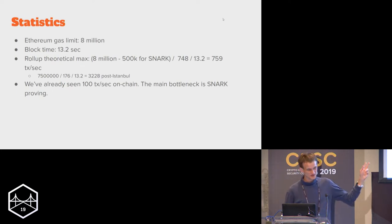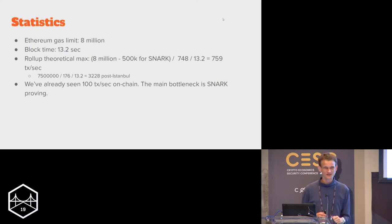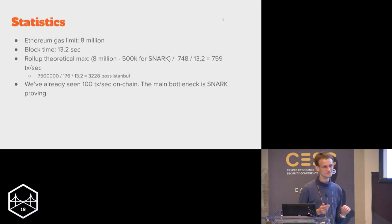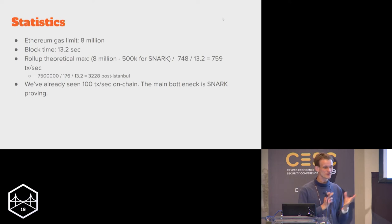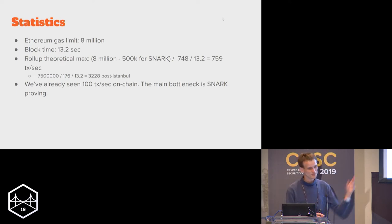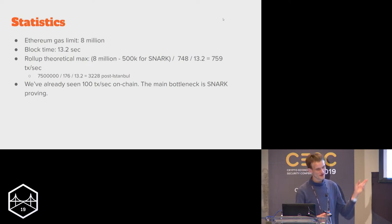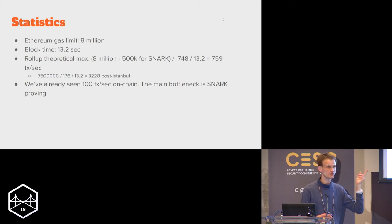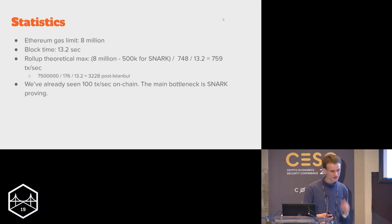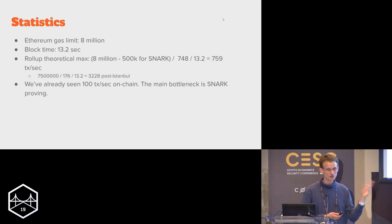Some statistics: Ethereum gas limit is 10 million now — everyone give a round of applause to the miners for raising the gas limit. Block time is 13 seconds. We can compute the theoretical maximum of a rollup. Pre-Istanbul: 748 gas per transaction, 759 transactions per second. Post-Istanbul it goes up to 3228. These numbers are out of date since the gas limit is now 10 million, so it goes even higher. We've already seen 100 transactions per second on-chain inside of a ZK rollup.